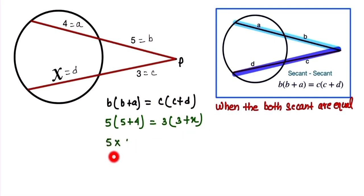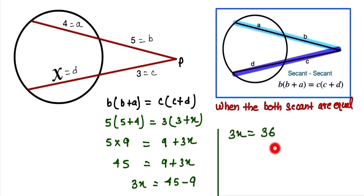So here is 5 into 9 is equal to 3 into 3 plus 3x. So here is 45 is equal to 9 plus 3x. So 45 minus 9, so here 3x is equal to 36, so here x is equal to 12.